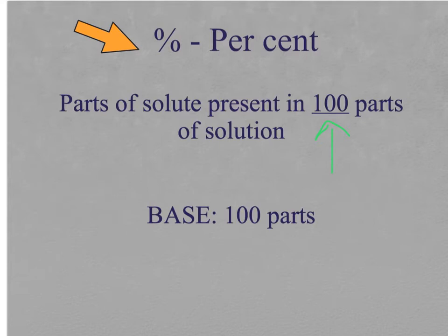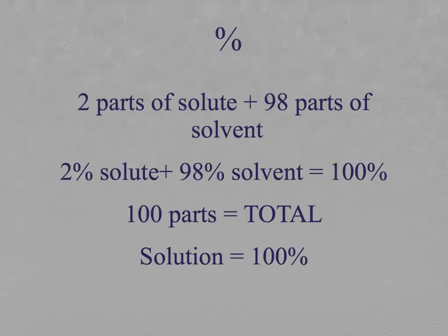It is important to notice that the base in the percentage is one hundred parts. If we have in a solution two parts of the solute, the rest of the hundred would be of the solvent. In this case, ninety-eight parts of the solvent, which can be translated as two percent of solute and ninety-eight percent of the solvent. The addition of the solute and the solvent will give one hundred percent.